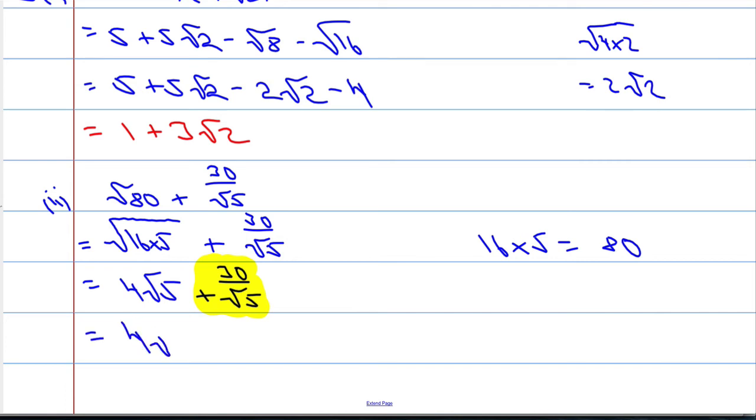So the 4√5, I'm not going to touch. I'm going to leave that alone. But 30/√5, I'm going to multiply above and below by √5. That will rationalize the denominator. I'm going to multiply top and bottom by √5. It's just like multiplying it by 1, so I'm not changing the value of it, I'm just changing the way it looks.